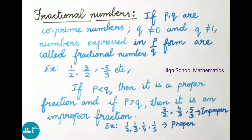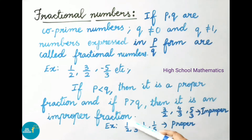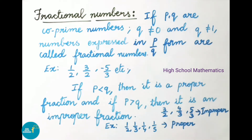All these are fractional numbers. If P value is less than Q value, then it is a proper fraction. Examples: 1/2, 1/3, 1/4, 1/5. Here P value is the numerator and Q value is the denominator. Since 1 is less than 2, all these are proper fractions.